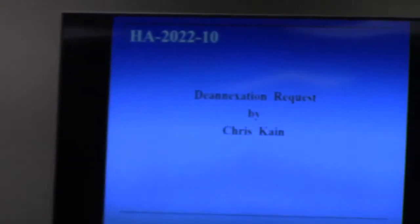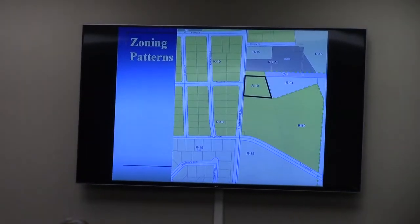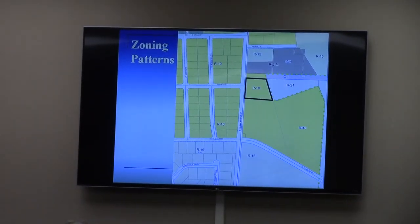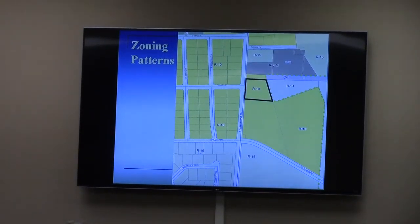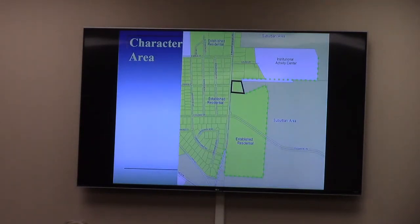The annexation out of the city limits back into an unincorporated area, presented by Chris Kane. The subject property is currently zoned R-10 in the city, located at the southeast corner of South Hayden Bridge Road and the entrance drive to Hayhoe Elementary School. The residential zoning pattern is reflected on the map, with a suburban area as you go eastward into the more unincorporated area of the county.